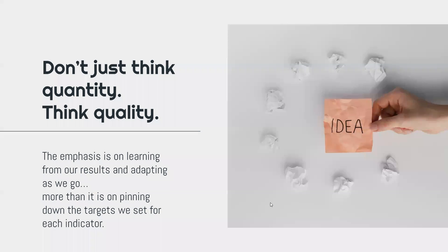I'd like to reinforce one idea I mentioned briefly: quality is a very underrated measurement in M&E. People want to talk about numbers a lot, but don't really value the power of a success story, a failure story, a change story, or someone's thoughts before and after — something that qualifies the work you're doing. The emphasis in RBM is on learning from results and adapting as we go, not on pinning down the targets for each indicator. You may hit 7,000 people trained, but if those 7,000 don't start saving, you've met your target but not achieved the result.